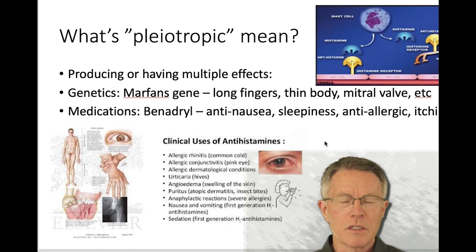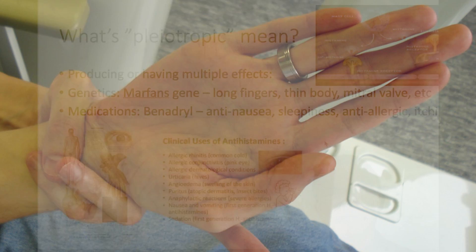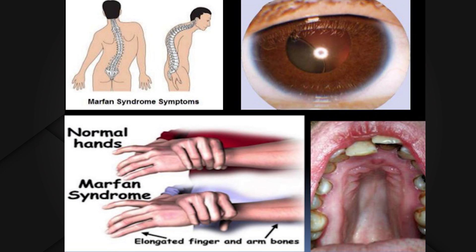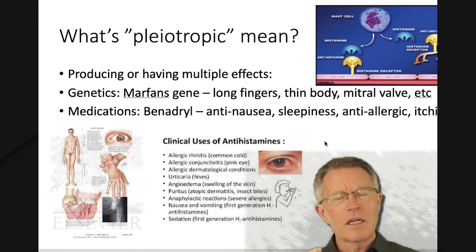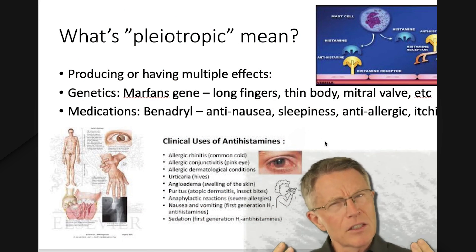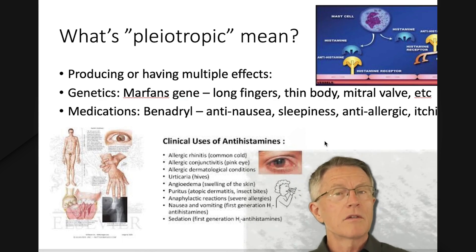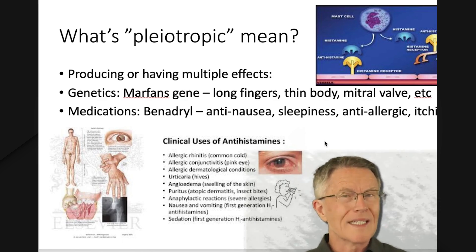For example, the Marfan's gene. It creates long fingers, a thin body, misshapen chest, mitral valve problems, joint problems, eye problems — a lot of things that may seem to be unrelated until you start going deeper.